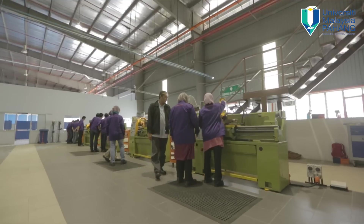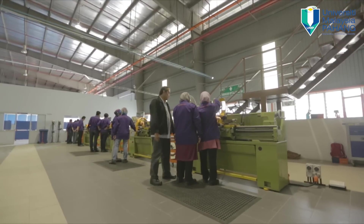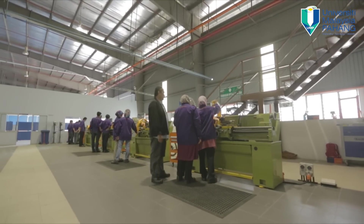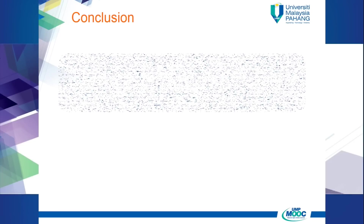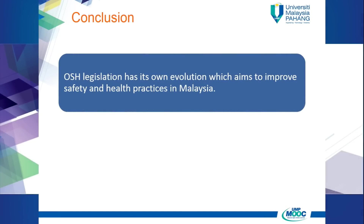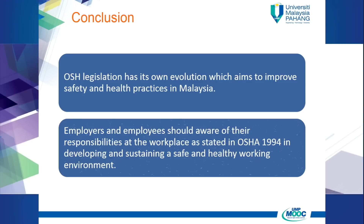To conclude our lesson: first, OSHA legislation has its own evolution which aims to improve safety and health practices in Malaysia. Second, employers and employees should be aware of their responsibilities at the workplace as stated in OSHA 1994, in developing and sustaining a safe and healthy working environment.